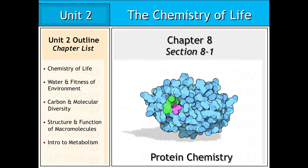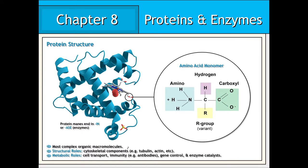In today's lecture, we're going to discuss the basic chemical nature of proteins. Proteins are regarded as being the most structurally complex and therefore functionally diverse of all organic macromolecules. Some of the structural roles that proteins play within the cell are those of the cytoskeletal components, such as microtubules, microfilaments, and intermediate filaments. Some of the metabolic roles include cell transport, immunity, gene regulation, and enzyme catalysts.